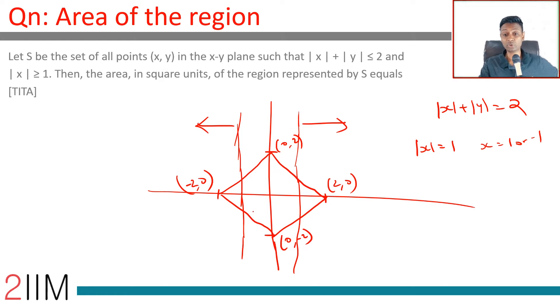|x| + |y| ≤ 2, the square which is tilted and looks like a diamond. The area in square units represented by S—what are the points here?